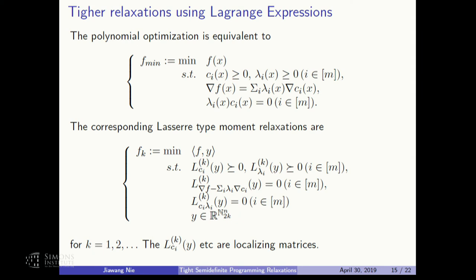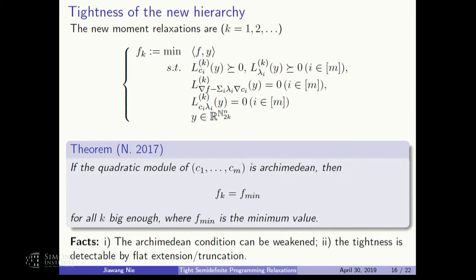I'd like to present the moment version rather than the SOS version. The moment version linearizes everything: you linearize the polynomial, obtain linear equation constraints for equalities, and for polynomial inequalities you have localizing matrices that must be positive semidefinite. These are the localizing matrices. We have more constraints, so we just apply them.